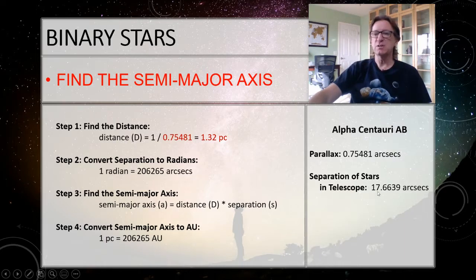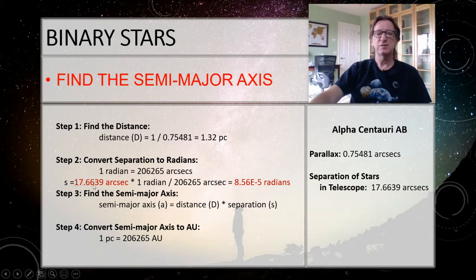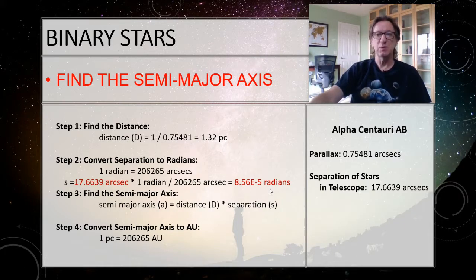Step 2: convert the separation from arcseconds to radians. We're not using the parallax here — we use the separation of 17.6639 arcseconds. Set up a fraction bar so arcseconds cancel: 17.6639 arcseconds × (1 radian / 206,265 arcseconds) = 8.56 × 10⁻⁵ radians. Tip: radians should always be very, very small — 10 to the minus something. If not, you did something wrong.